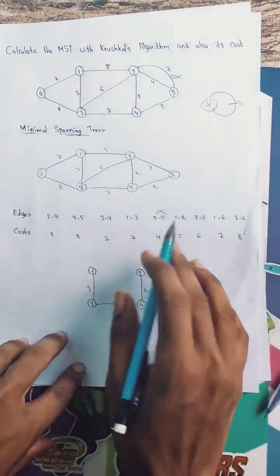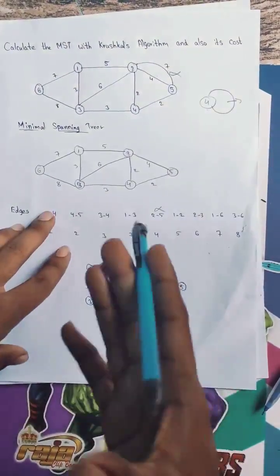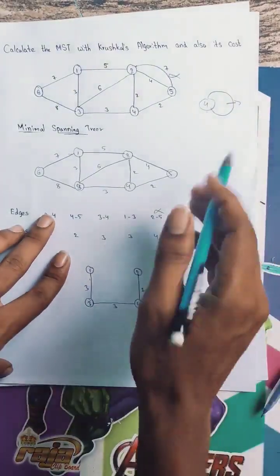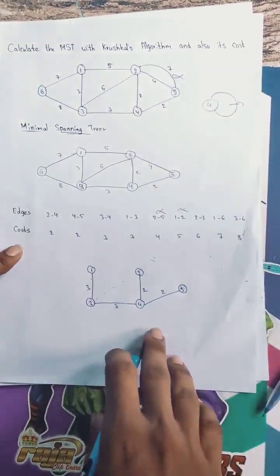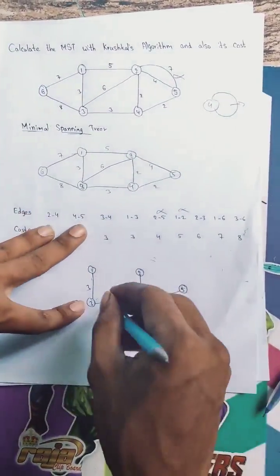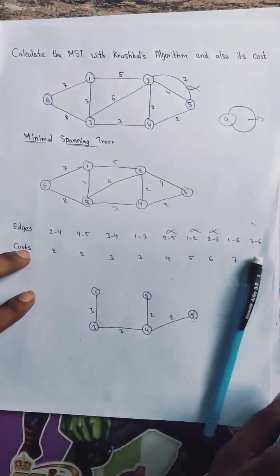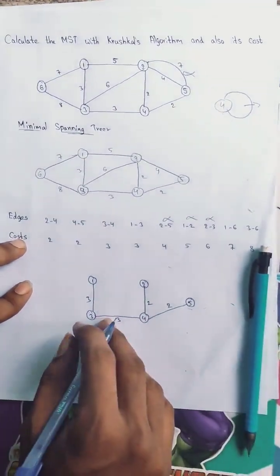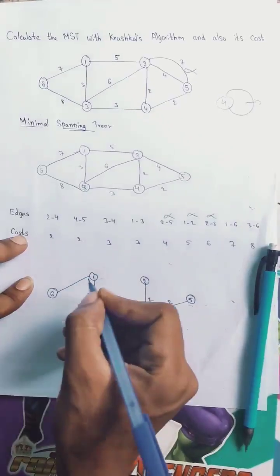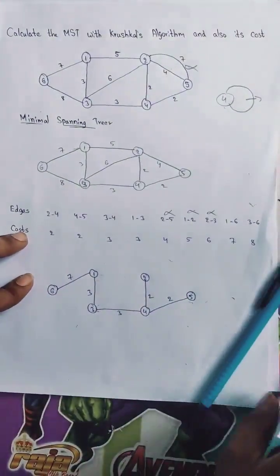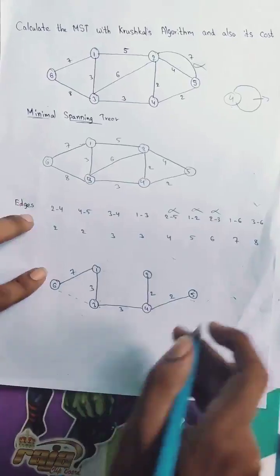Now consider the 1-to-2 edge with cost 5 — this also forms a cycle, so we must avoid it. Next, the 2-to-3 edge with cost 6 also forms a cycle, so we avoid that as well. Next is the 1-to-6 edge with cost 7 — here no cycle is formed, so we can add this edge. Finally, the 3-to-6 edge with cost 8 would form a cycle, so we avoid it.